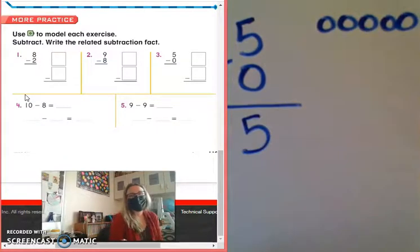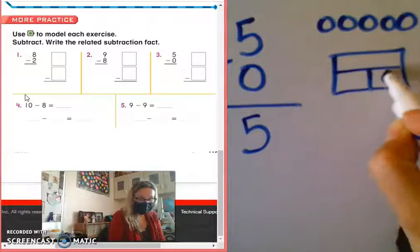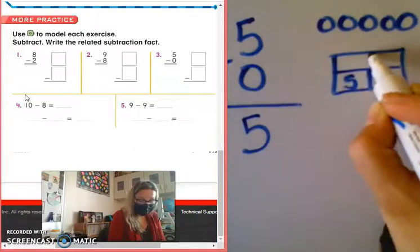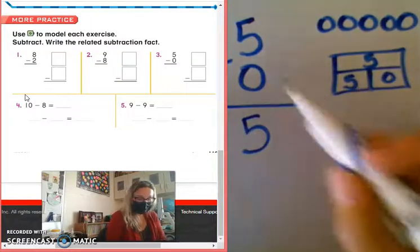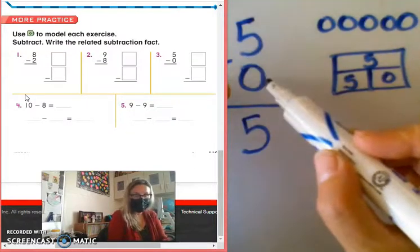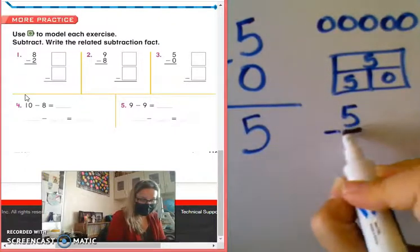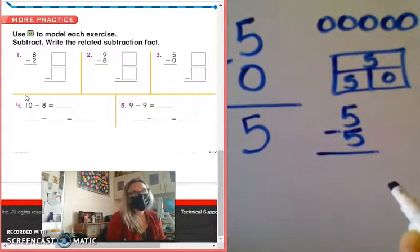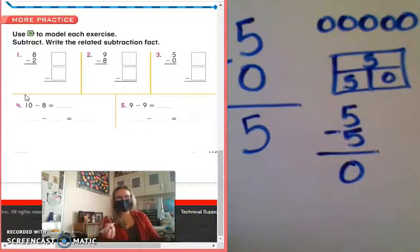Now, Emma, if my two parts, think about the part, part, whole, okay? My two parts are 0 and 5, and altogether that gives me 5. Then my other subtraction sentence, instead of 5 take away 0 is 5, I would say 5 take away 5 equals 0. Good job.